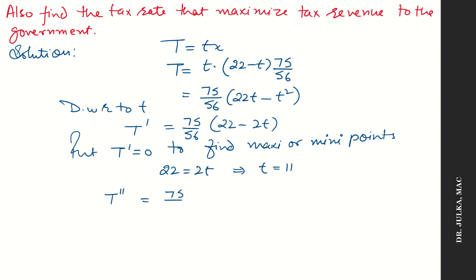When we put first derivative equal to 0, we'll get the value of t equals to 11. Now the double derivative is 75 by 56 into minus 2. If we check at t equals to 11, the answer is minus 75 by 28, which is less than 0. So maximum tax revenue at t equals to 11. So when we charge 11 rupees per unit tax, we'll get maximum revenue.